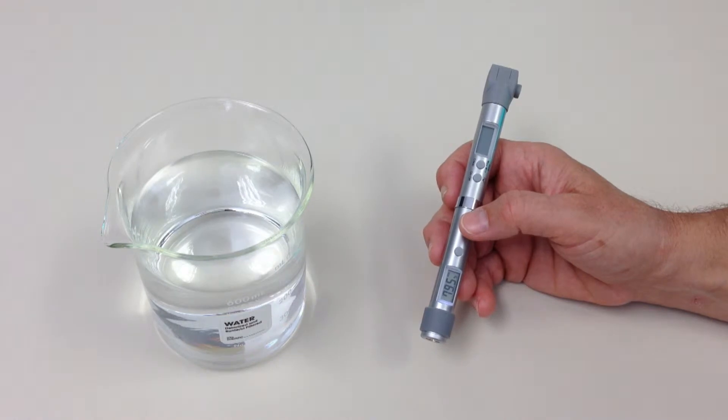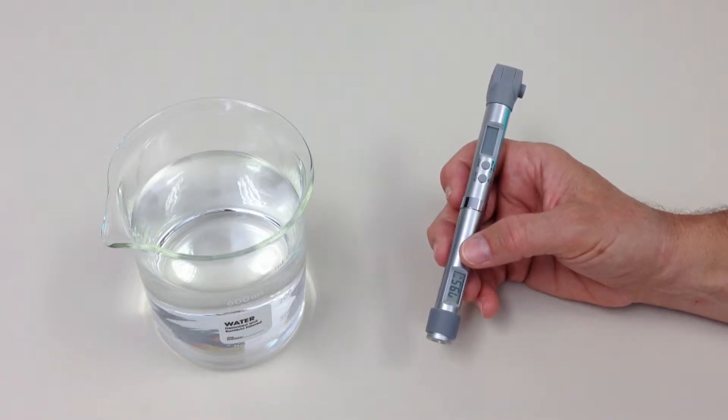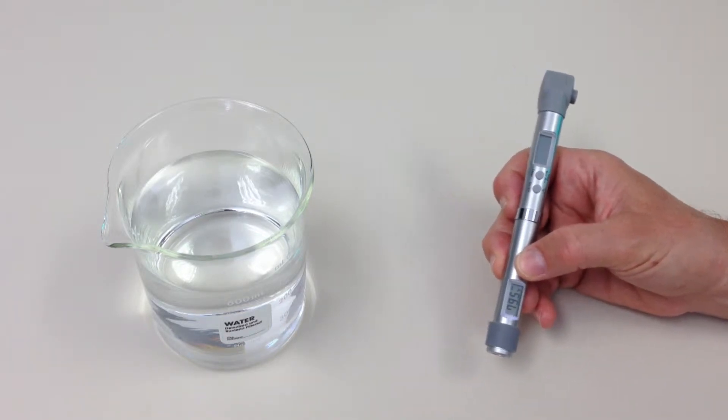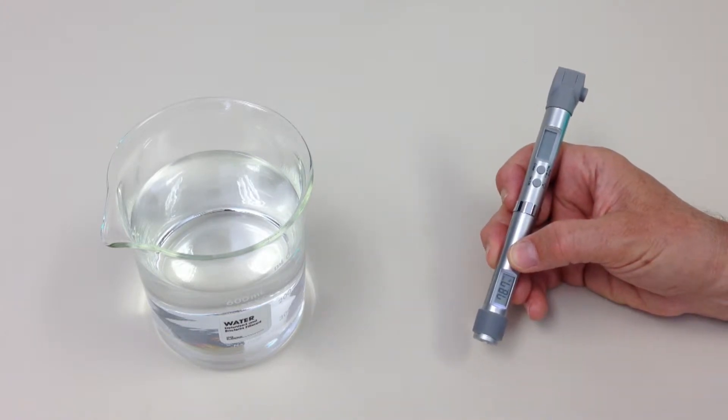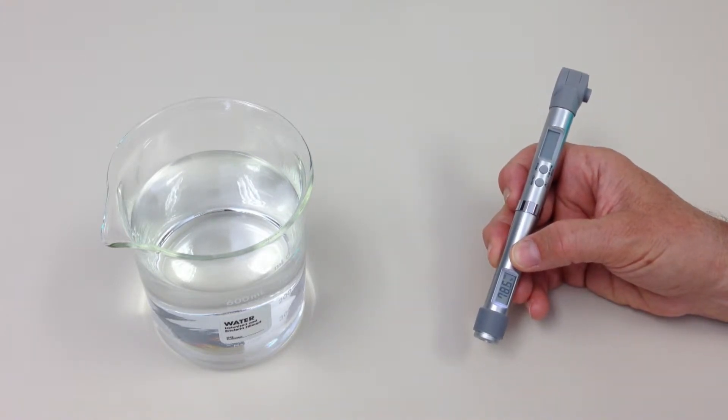For surface temperature measurements, one end of the sturdy metal pen contains a non-contact infrared thermometer. Press the button to scan and release to hold temperature. IR results are displayed immediately on the backlit LCD.